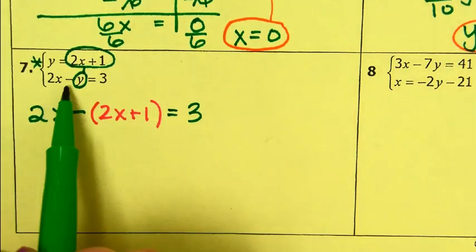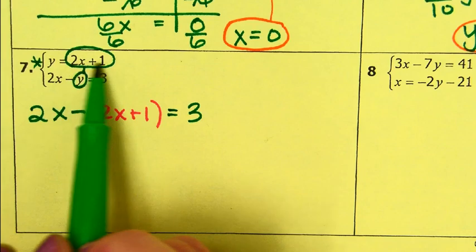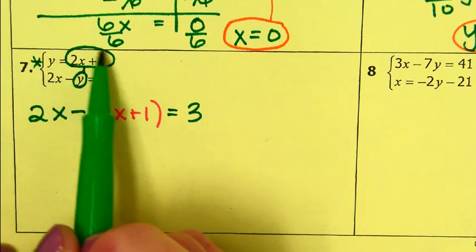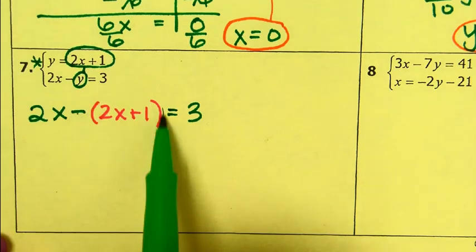Because what's happening here is the y is being subtracted. The entire y is being subtracted. And if y is 2x plus 1, the whole 2x plus 1 has to be subtracted. So I need to subtract this whole expression.